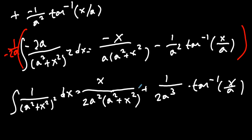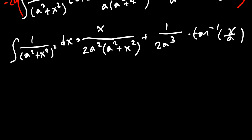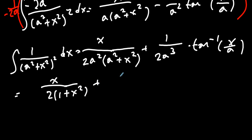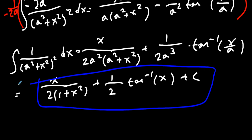That's the general form, but we were asked to find the integral where a equals one. Substituting a equals one, we get: the integral of one over (one plus x squared) squared dx equals x over (2 times (1 plus x squared)) plus one half times arctan of x, plus C. And there's our final answer using Feynman's technique.